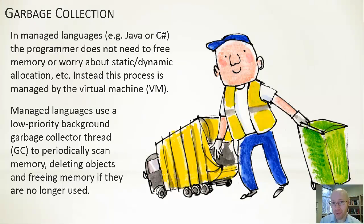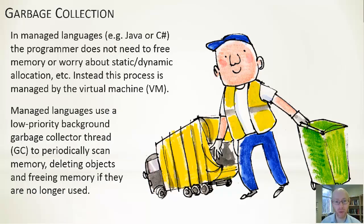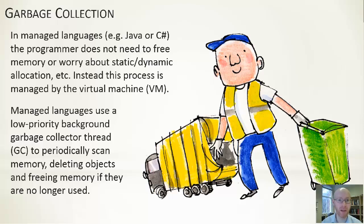In managed languages, it's one of their strengths that you don't have to bother about that. You can create objects in Java, just bring them into existence, use them, and ignore them. Whenever they go out of scope, or whenever the references to those objects go out of scope, the garbage collector will eventually get around to freeing up the memory. So it is a managed language because the process of allocating and de-allocating these objects is managed for us.